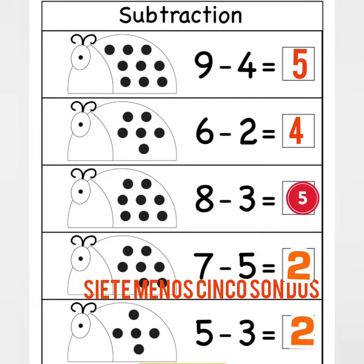The next one says seven minus five equals two. You're going to say: siete menos cinco son dos.